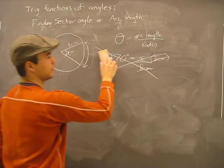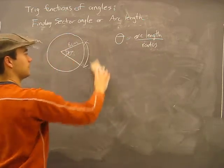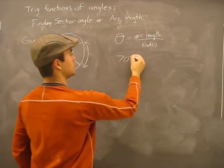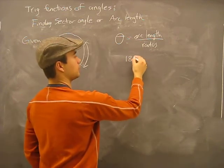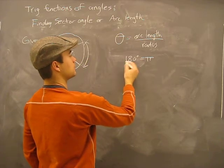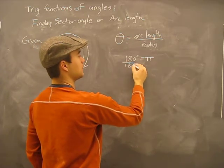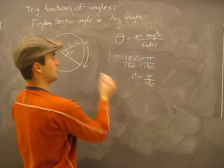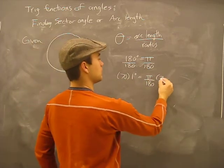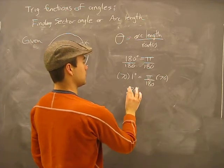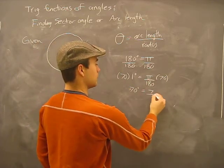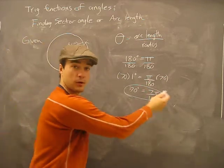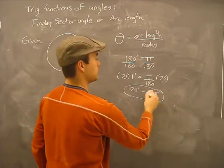Any time you want to convert degrees to radians, here's how. I know that 180 degrees equals pi radians. So I divide both sides by 180, giving one degree equals pi over 180. Then I multiply by 70 to get seventy degrees, which equals seven pi over eighteen. That's my value in radians.